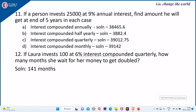If a person invests 25,000 at 9% annual rate of interest, find the amount he will get at the end of 5 years in each case. The first case is interest compounded annually. Here you have to consider the 9% as it is and the n value as 5, and use the same recurrence relation.